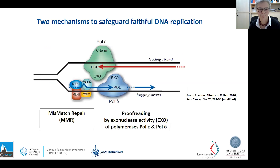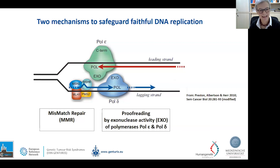So, what is the mismatch repair mechanism? It's one of two mechanisms that ensure our DNA during cell division is faithfully replicated. Many of you may know that during cell division, the DNA needs to be duplicated — that is replication — and that is performed by the enzymes polymerases. These polymerases make mistakes during replication, but they have an intrinsic proofreading activity, which is executed by the exonuclease activity of these polymerases, and they can correct the errors they make. But still some errors escape this proofreading, and then we need a backup system — the mismatch repair system.